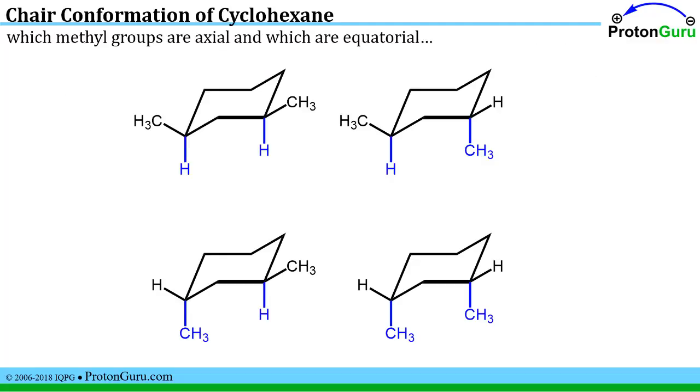First it asks us which methyl groups are axial and which are equatorial. Well here I've just highlighted all the axial positions as blue, like I did in our drawing of cyclohexane. The methyl groups that are axial are those that I've circled. And we put a square around the methyl groups that are equatorial.